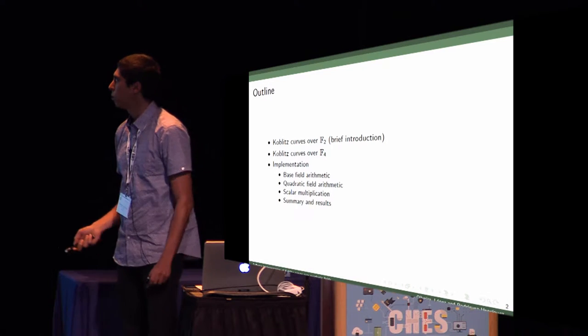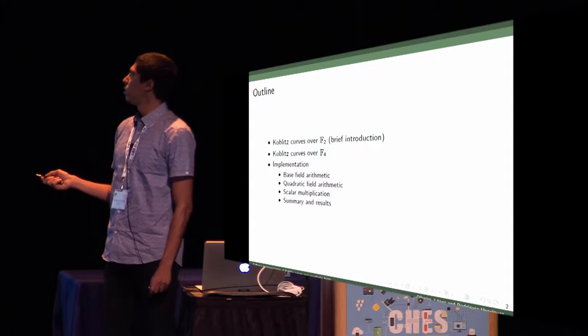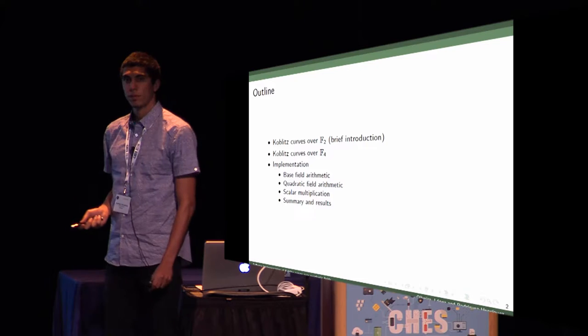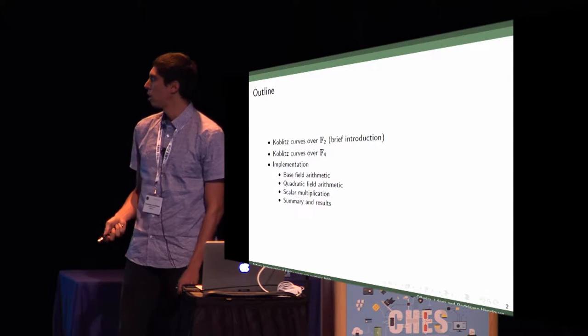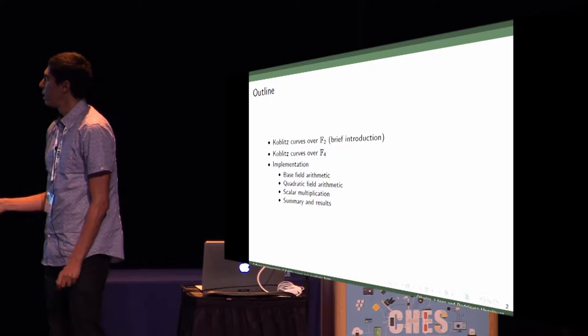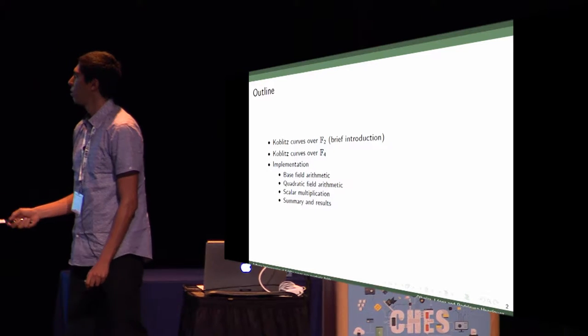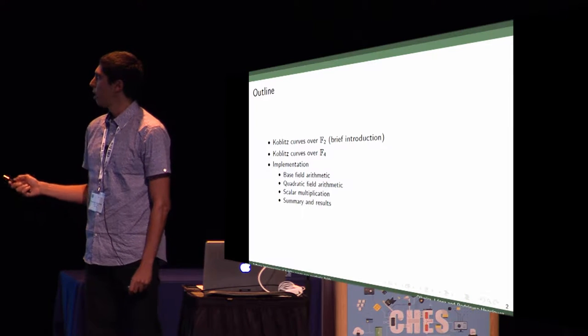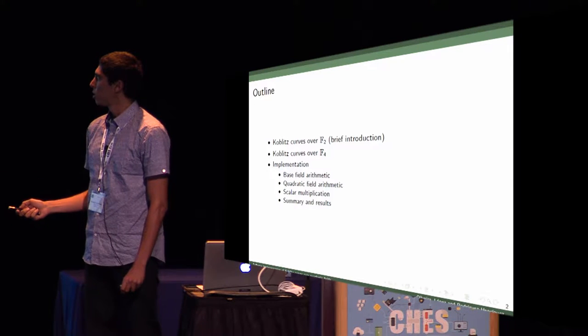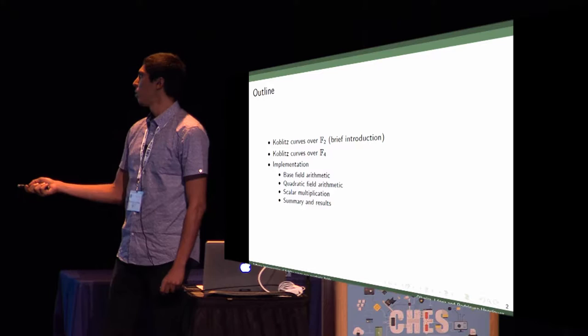The outline of this talk will be as follows. First I'll give a brief introduction on Koblitz curves over F2. Then we'll see aspects of the Koblitz curves over F4. And finally we have some details about our implementation in base field arithmetic, quadratic field arithmetic, scalar multiplication, and summary and results.